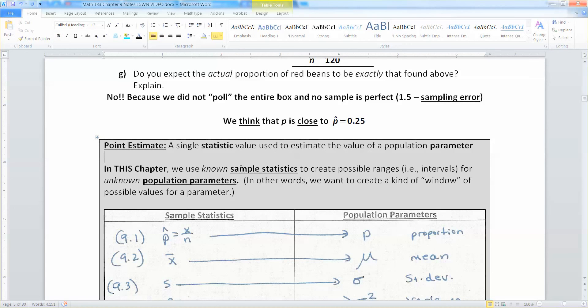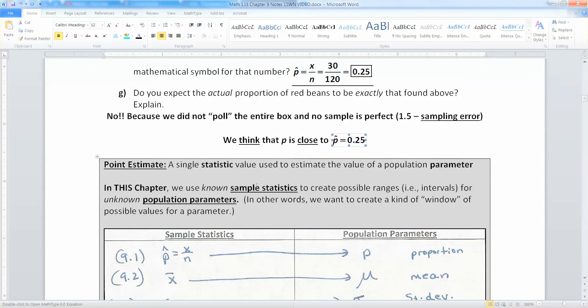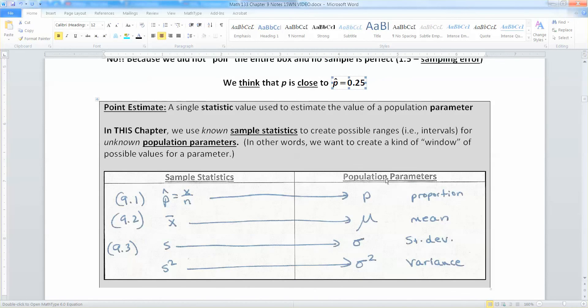So we're going to build windows, if you will, intervals, ranges. From our sample statistics. So you're going to take your sample value of P hat, and you're going to build from it an interval. And you think that your unknown parameter, P, is somehow in there. So you're going to create a window of possible values for where you think that parameter is going to fall.